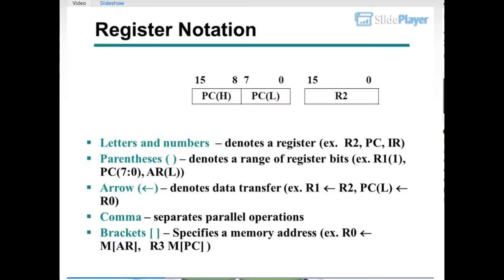Register notation: Letters and numbers denote a register, e.g., X, R2, PC, IR. Parentheses denote a range of register bits, e.g., R1(1), PC(7:0), RL. An arrow denotes data transfer, e.g., X ← R1, R2 ← PC. A comma separates parallel operations. Brackets specify a memory address, e.g., X ← R0, R3 ← M[PC].